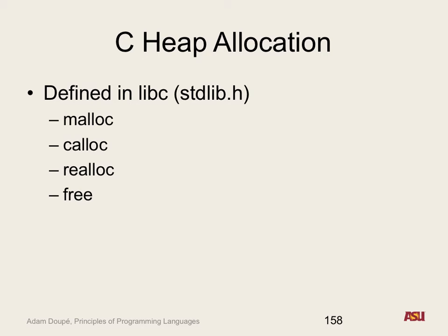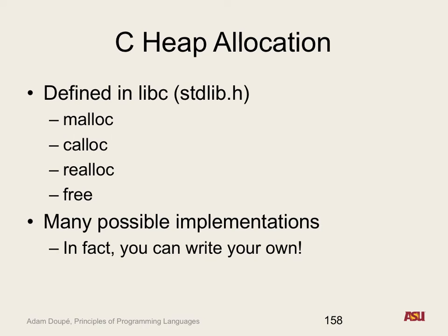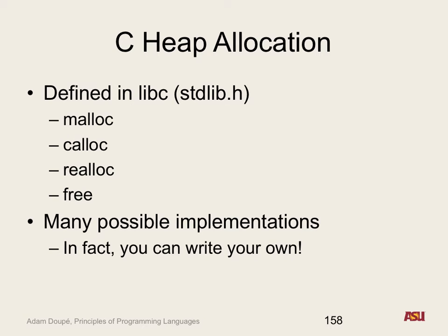Free returns the memory and says you're no longer using it. A very cool thing about these being defined in the C standard library is that there are many different heap allocation algorithms for how you manage and return the heap. You can actually write your own heap management — it's not part of the operating system, it's part of the library. This enables cool things in embedded systems environments where you have specific heap requirements and can use your own version of malloc and free.